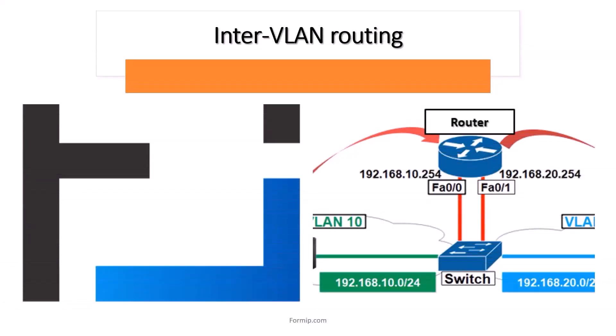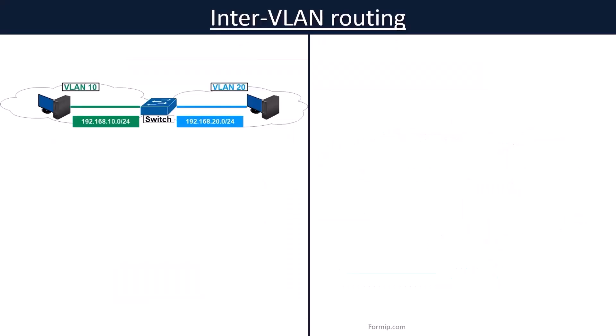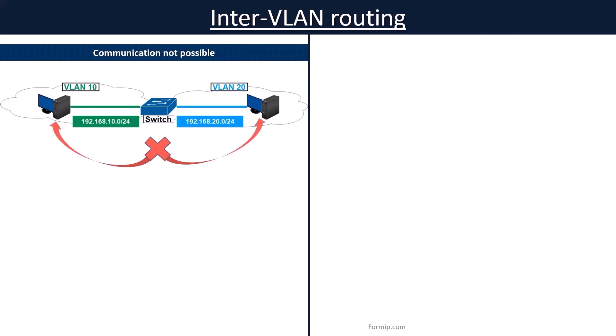Each VLAN is a unique broadcast domain. Computers on separate VLANs are, by default, unable to communicate. To allow communication between VLANs, inter-VLAN routing is required.